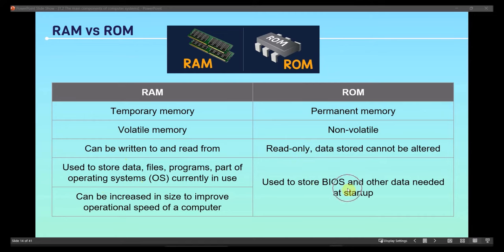ROM stores the BIOS — Basic Input Output System — which contains everything needed to start up and update your computer, like connecting keyboard and mouse. Whenever you boot your computer, it checks all input/output devices. In older devices, if a keyboard or mouse was not connected, a black or blue screen would appear telling you a device is missing, and you'd need to restart after reconnecting.